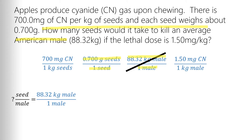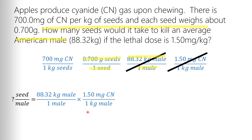We'll start with 88.32 kilograms of male over male, and cross that one out because we've already used it. Now we're not dealing with male — male's done. We're dealing with kilogram of male. Do I have another factor with kilogram of male? Yes — over here I've got 1.50 milligrams of cyanide per kilogram of male. Kilogram of male is on the bottom, so it cancels with kilogram of male on top. If I were to do the math right now, it would be milligrams of cyanide per male.